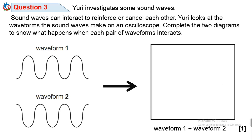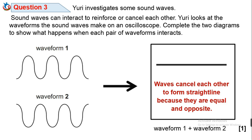Still on Question 3: Another pair of waveforms, also named Waveform 1 and Waveform 2, is given with an empty box for their combination. In this case, Waveform 1 and Waveform 2 are different and in opposite directions. Because they are equal and opposite, the combination of these waves will cancel each other out to form a straight line.